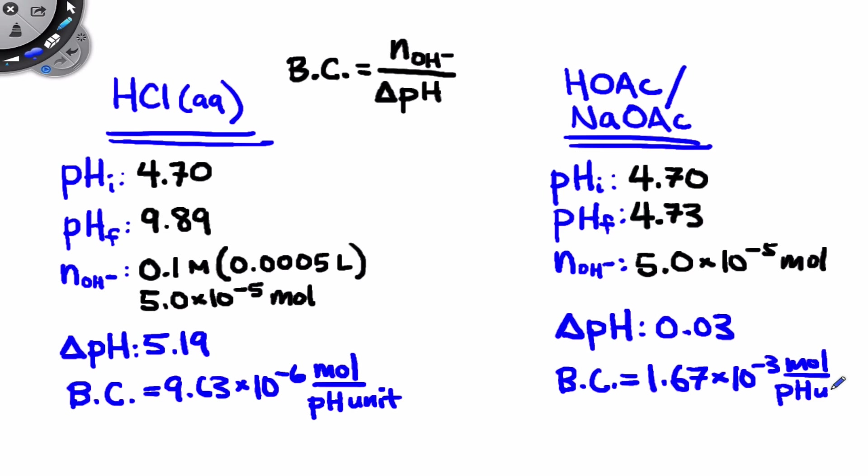And qualitatively, what we can say is that it takes many more moles of strong base to cause a single unit change in pH for the buffer than it does to cause that same unit change in pH for the HCl solution. So the buffer resists the pH increasing effect of the strong base. Buffer capacity just allows us to illustrate this in a quantitative way.